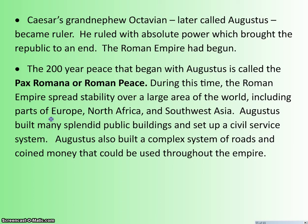It begins with a 200-year peace called the Pax Romana, or Roman Peace — Latin for 'Roman peace.' During this time, the Roman Empire spreads stability over a large area including parts of Europe, North Africa, and Southwest Asia. They conquer all the way up into Britain, to the Rhine and Danube rivers, Romania, all of modern-day Turkey, most of the Middle East, Iraq, all of North Africa, and a fair ways down the Nile. Augustus builds a very complex system of roads and coins money used throughout the empire — similar to Shi Huangdi, he standardizes things and makes communication and transportation much easier.